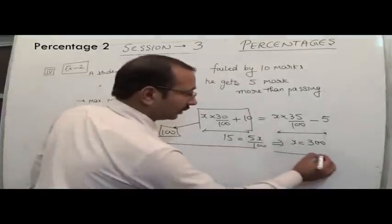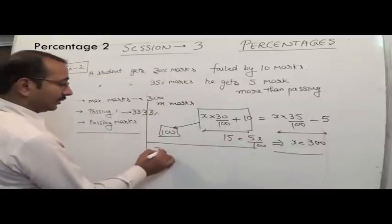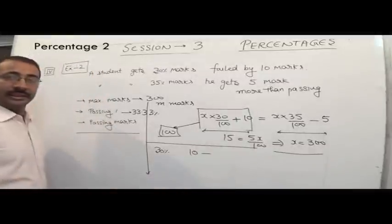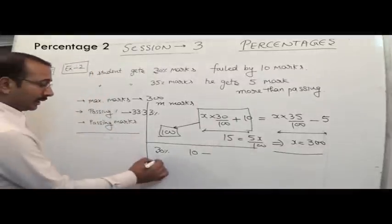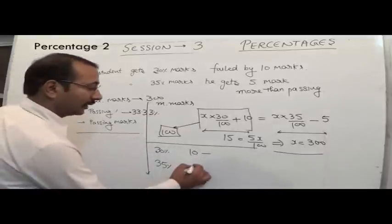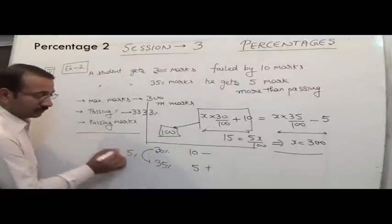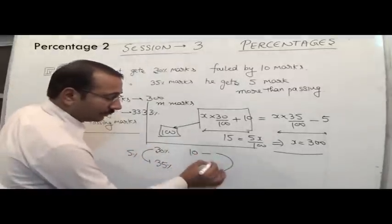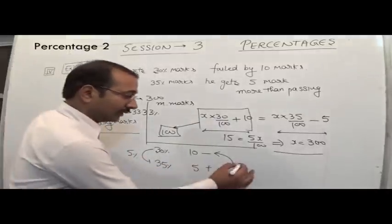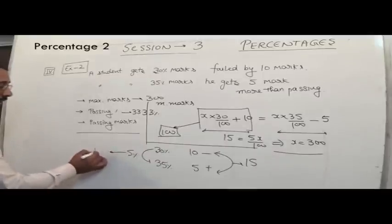We can also answer this question using a small structure. When he gets 30% of the marks, he fails by 10 marks — meaning he gets 10 marks less. In the second case, when he gets 35%, he gets 5 marks more. The difference in percentage is 5%. The difference in absolute value: first he was 10 marks less, now he is 5 marks more — this equals 15.